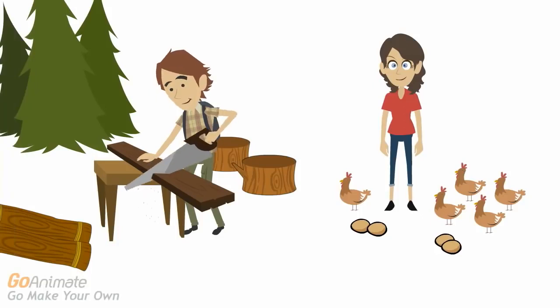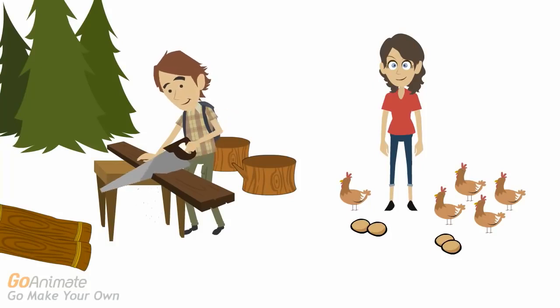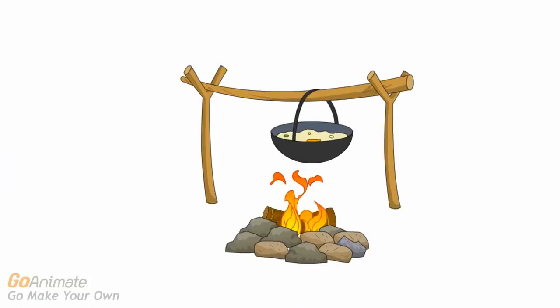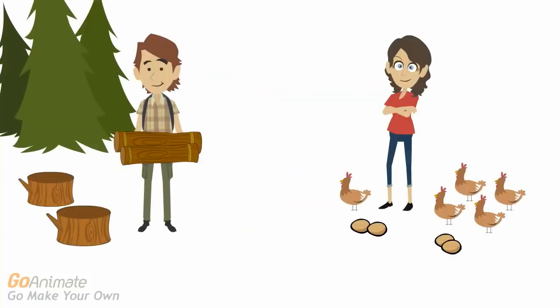Billy is a lumberjack and Mary is an egg farmer. After chopping down many trees, Billy soon has more wood than he needs. Similarly, Mary soon has more chickens and more eggs than she can eat. That means they have a surplus. Billy, after chopping down all the trees, is now very hungry and would very much like some food, and Mary would like some firewood so she can cook her food. And thus, a trade will develop between Billy and Mary.